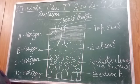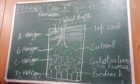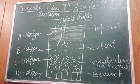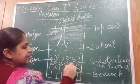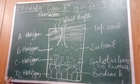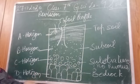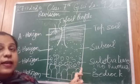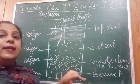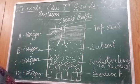Coming to the D horizon — that is the bedrock. It is the solid, hard layer of weathered rock. Water cannot penetrate through the bedrock, so it accumulates above it. This water accumulated above the bedrock is known as underground water or groundwater. The level of this water is known as the water table.